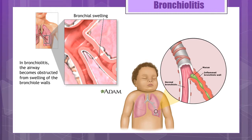Causative organisms can be respiratory syncytial virus (RSV), which is the majority of cases. It can also be caused by adenoviruses, parainfluenza viruses, human metapneumovirus, and mycoplasma pneumonia. Symptoms include upper respiratory infection with mild fever and clear nasal drainage, followed by development of a wheezing cough and signs of respiratory distress. Infants may have apneic episodes, which are usually the cause of hospitalization. Infants who have bronchiolitis may develop a hyperactive airway or asthma later in life.